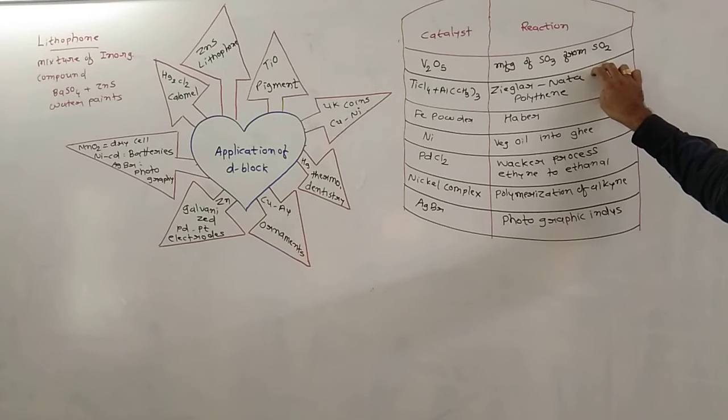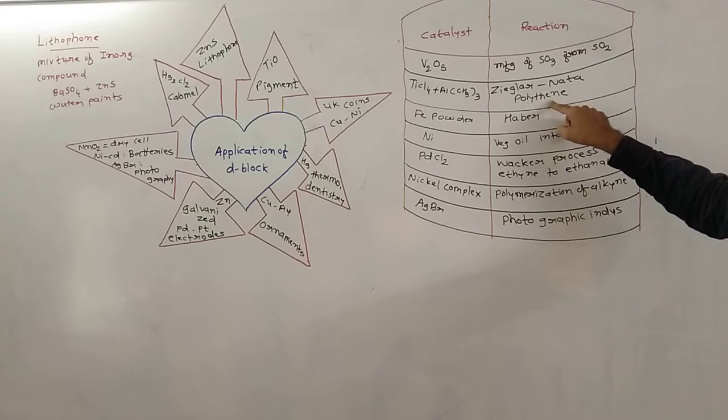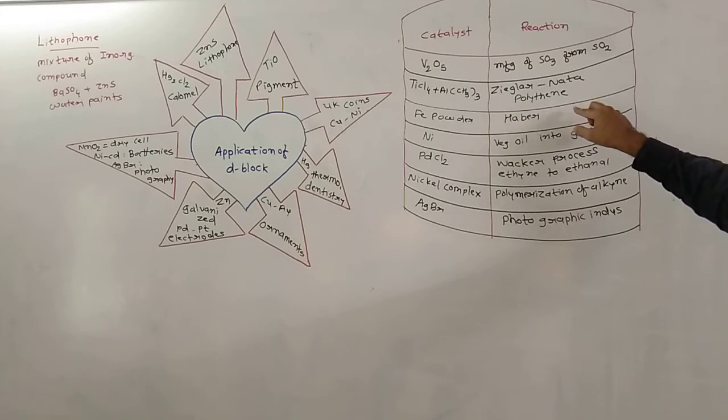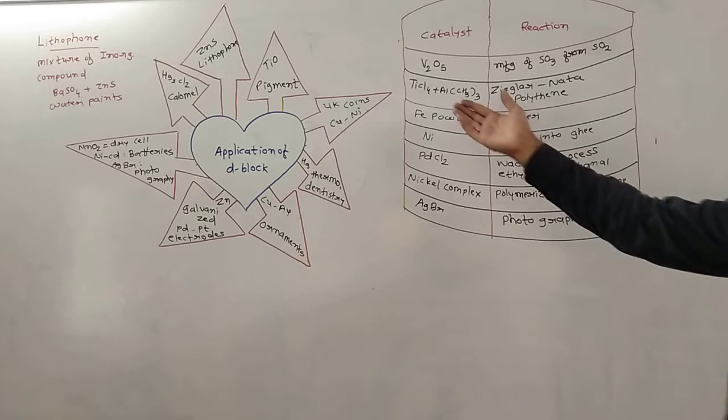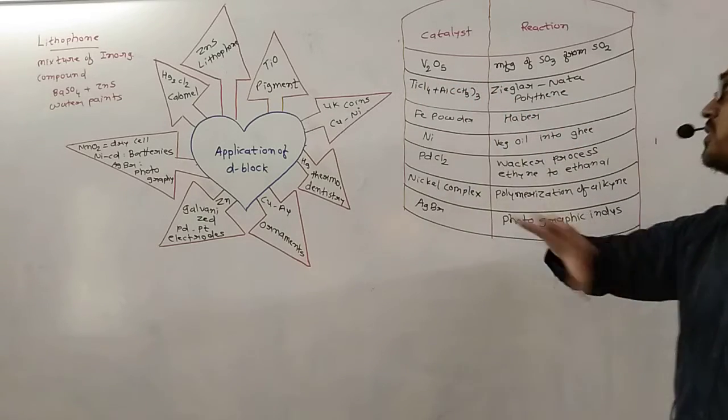So the name is Ziegler-Nata and it is used in the preparation of polyethylene. Polymerization process is used, I will discuss it in the polymer chapter.